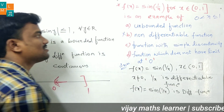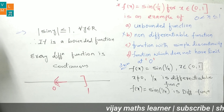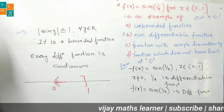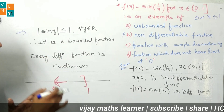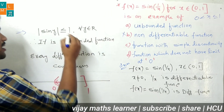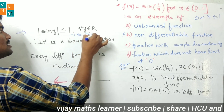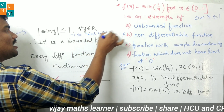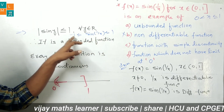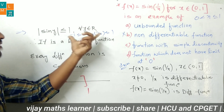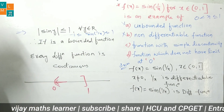So option B — non-differentiable function — is incorrect, since sin(1/x) is differentiable. Now, the range of sine is [−1, 1], meaning |sin(θ)| ≤ 1. So the value of sin(1/x) also lies between −1 and 1. Therefore the range of sin(1/x) is [−1, 1], making it a bounded function. So option A — unbounded function — is also incorrect.